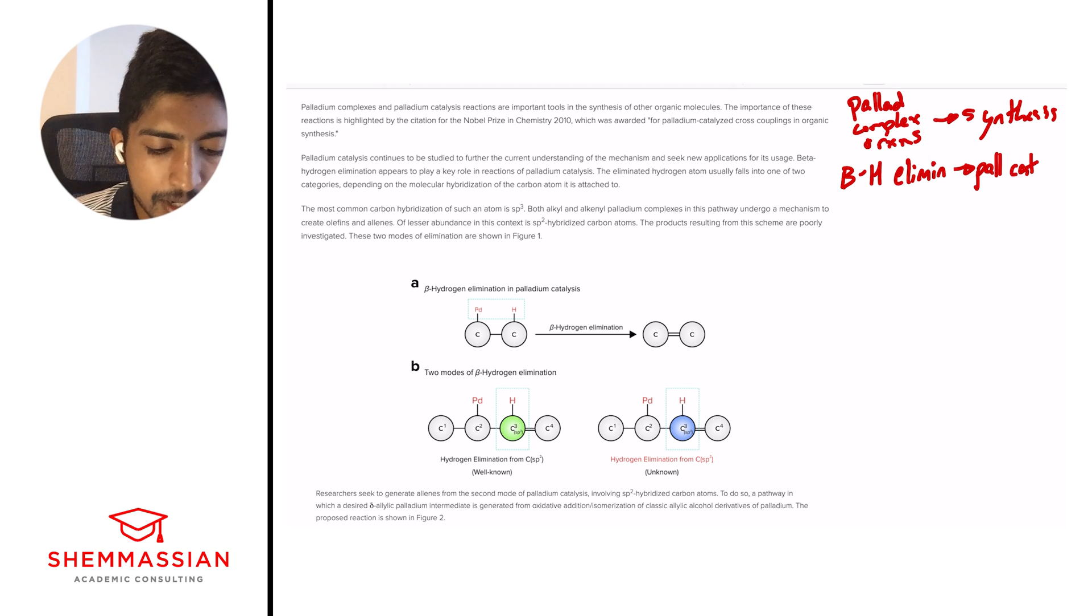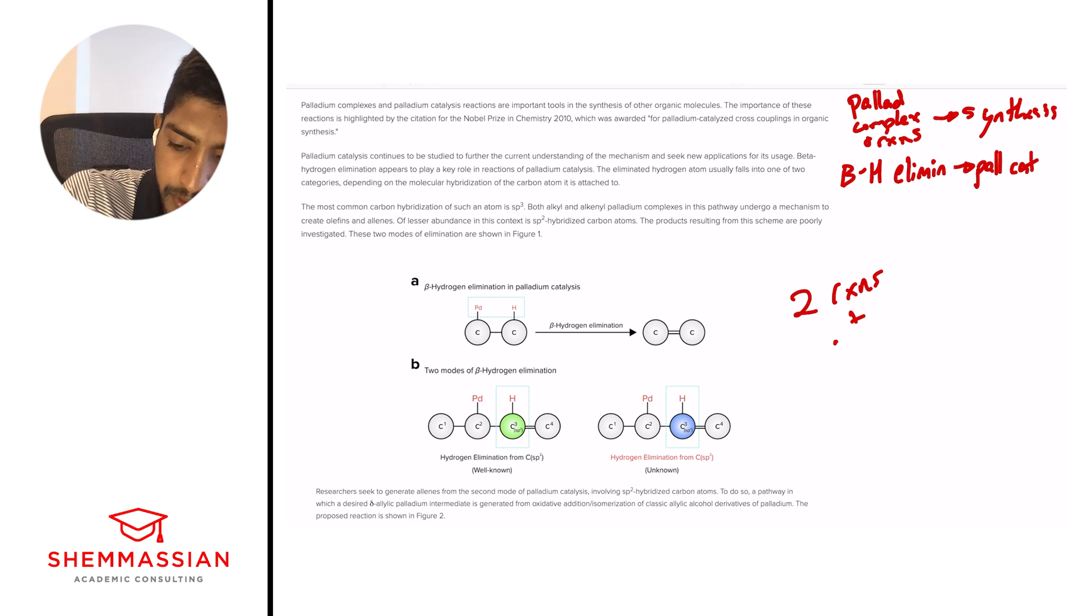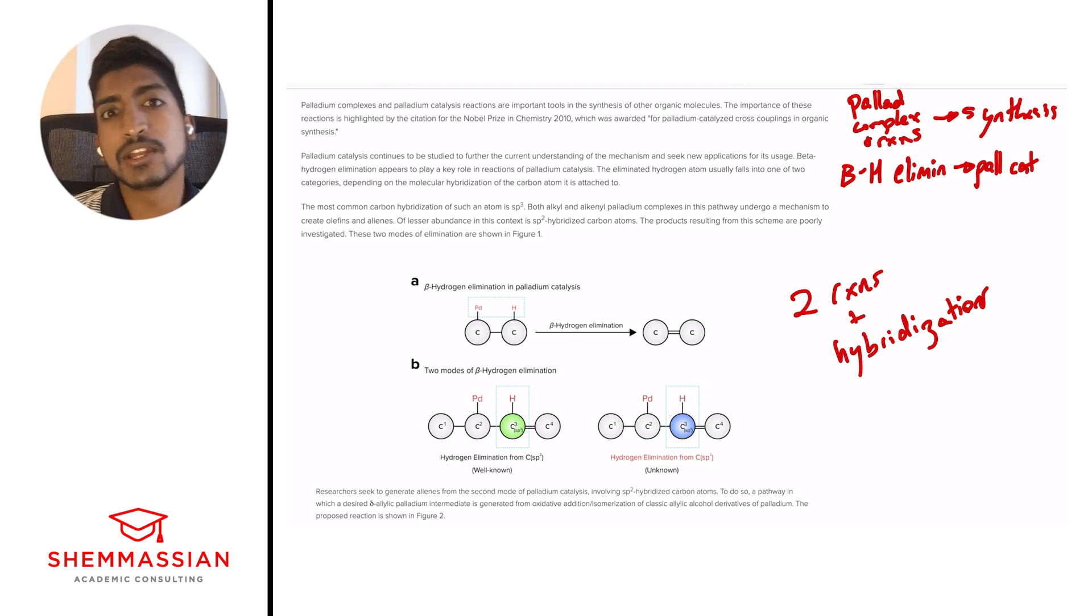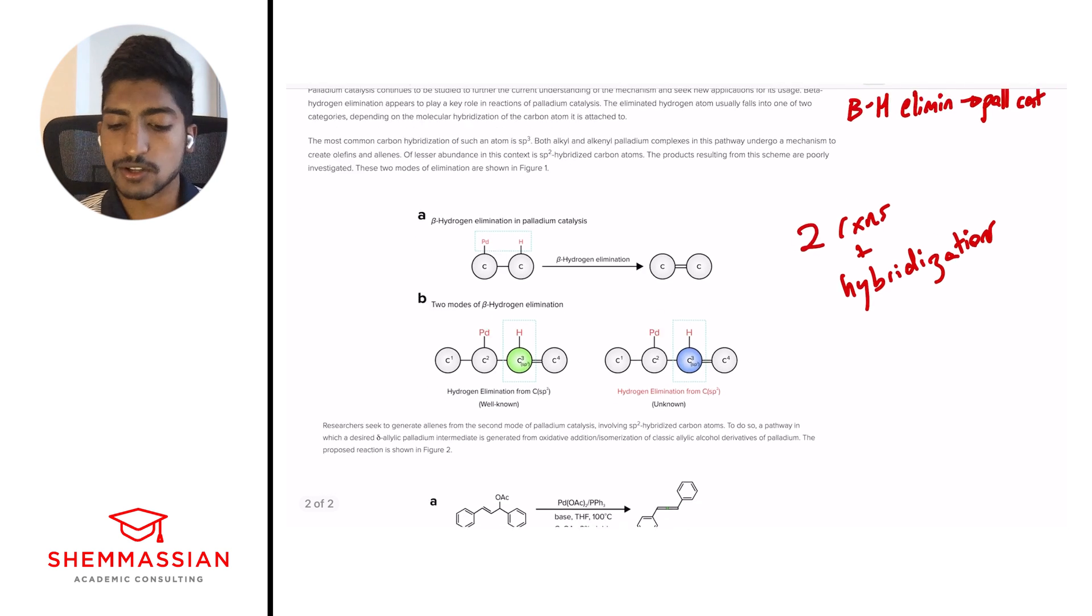And there's so many details. It talks about these two categories, the molecular hybridization. And we don't really care about that too much right now. Rather, we want to focus on the big picture because if they ask us for the details, we want to know where to come back to. All right. Let's go on to the next paragraph. The most common carbon hybridization of a such atom is sp3. Both alkyl and alkyl palladium complexes in this pathway undergo a mechanism to create olefins and allenes. Of lesser abundance in this context is sp2 hybridized carbon atoms. The products resulting from this scheme are poorly investigated. The two modes of elimination are shown in figure one. And then they show us these two figures. And so here, again, not going to focus on the details. I'm going to talk about two reactions plus hybridizations, right? And so now we know that they're talking about sp3 and sp2 carbons and like olefins and allenes. But we know exactly where to come back if a question asks us for this. And then, again, like I said earlier, we're not going to spend too much time on the figures themselves. We see that there's a reaction. If we look closer, we see there are two types of beta-hydrogen elimination. But we're not even going to focus on that right now. We want to just focus on the big picture. And so let's just go on to the next paragraph then.